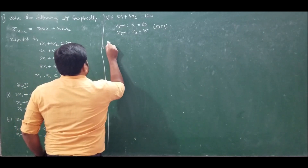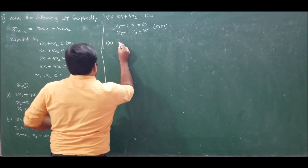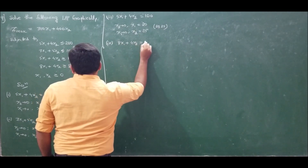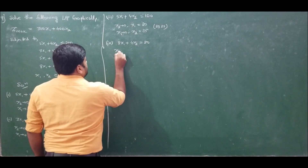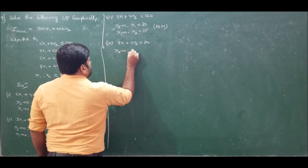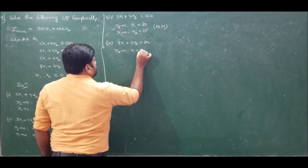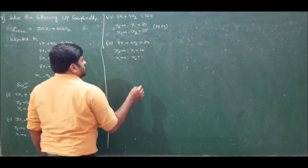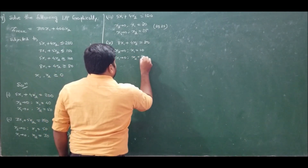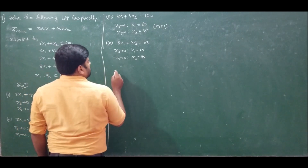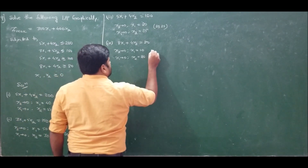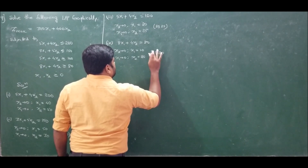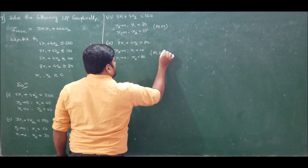Similarly, take constraint 4 as an equation: 8x1 plus 4x2 equals 80. Setting x2 to 0, x1 equals 10. Setting x1 to 0, x2 equals 20. So the coordinates of this equation are (10, 20).